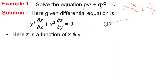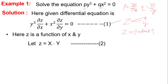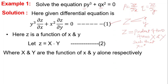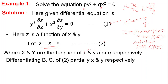The dependent variable here is z, and it is a function of x and y. Therefore we assume z as a product of two functions: z = X·Y, where capital X is a function of x only and capital Y is a function of y only. Differentiating both sides partially with respect to x, del z/del x = X'·Y, where X' = dX/dx.